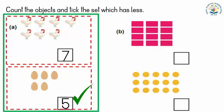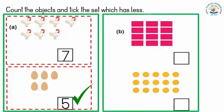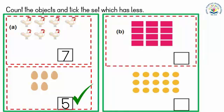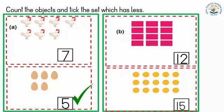Look at Set B. Count rectangles and write the number in the given box. There are twelve rectangles. Now count circles and write the number in the given box. There are fifteen circles. So which number is less? Yes, twelve is less than fifteen.